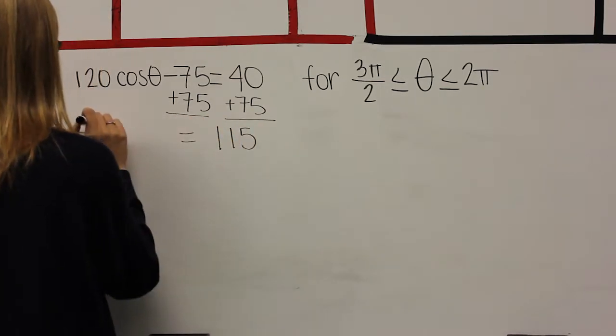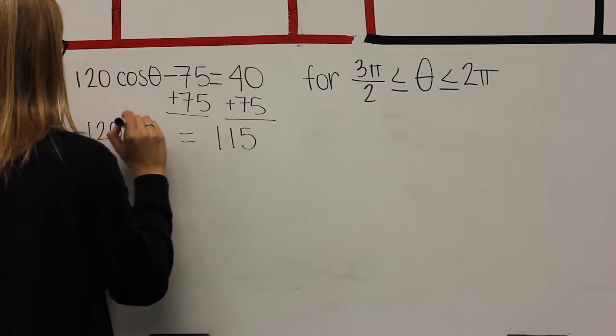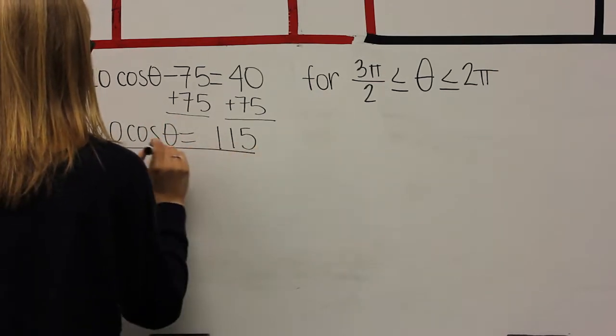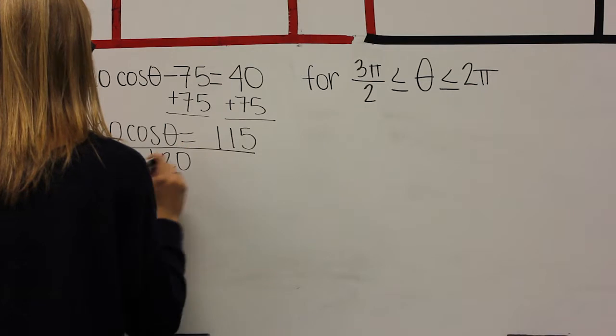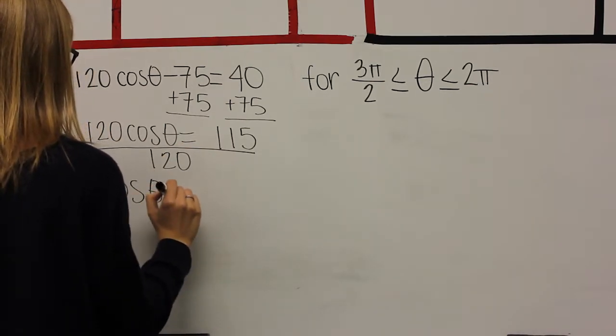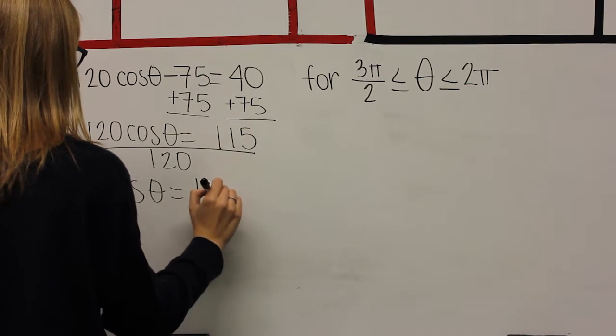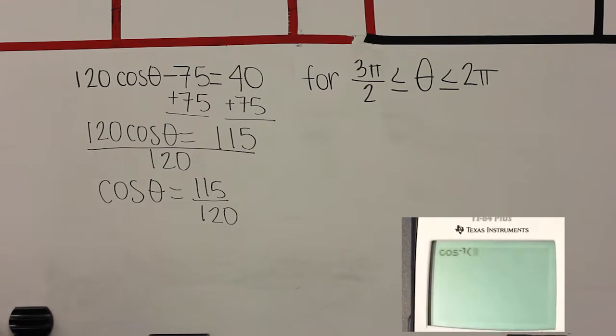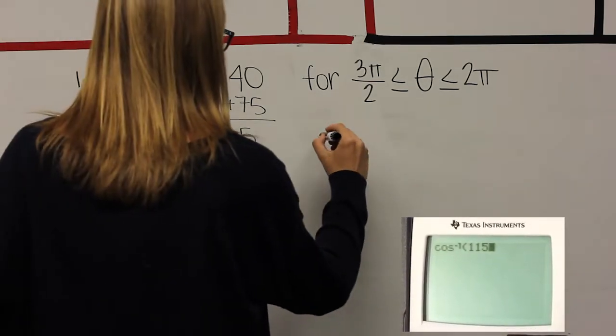For problem C, the new domain is 3 pi over 2 to 2 pi. This is in quadrants 3 and 4. Once you isolate cosine, you get cosine equals 115 over 120. Type this into your calculator as inverse cosine and your first answer is in quadrant 1. Take this answer and subtract it from 2 pi to get your answer in quadrant 4.